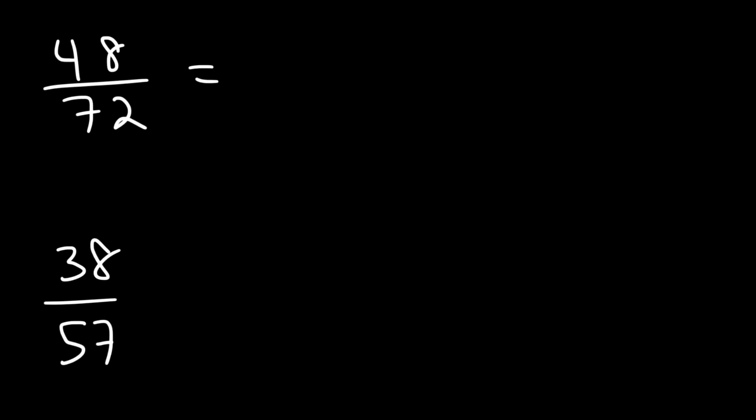Now 48, what two numbers do you think is equal to 48? The first two numbers that come in my mind are 8 and 6. And 72 is 9 times 8, or 8 times 9. So we could cancel an 8.